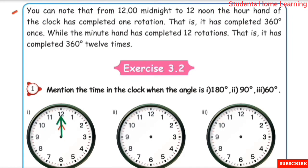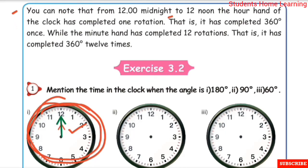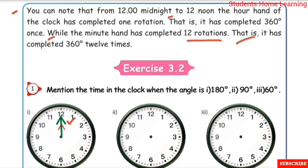You can note that from 12 midnight to 12 noon, the hour hand of the clock has completed one rotation. The red color hand — the hour hand — from night 12 o'clock to the next day's 12 o'clock, it has completed 360 degrees once. In a circle, the angle is 360 degrees. While the minute hand has completed 12 rotations — the green color hand — from night 12 o'clock to the next day's 12 o'clock, it has rotated 360 degrees 12 times.